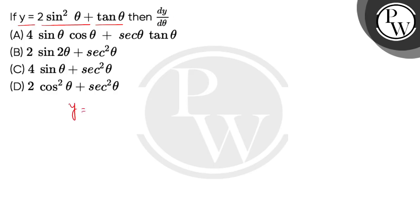So guys, question में given है, हमें y is a function of theta. So y is equal to 2 sin square theta plus tan theta. अब इस expression को जब हम with respect to theta differentiate करेंगे, means first order derivative निकालेंगे. So this is d by d theta of 2 sin square theta plus d by d theta of tan theta.